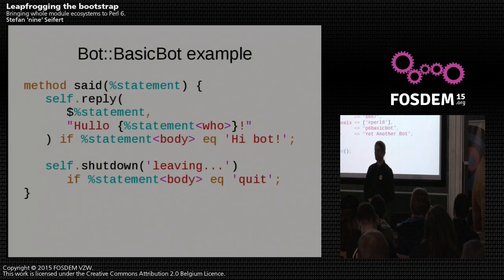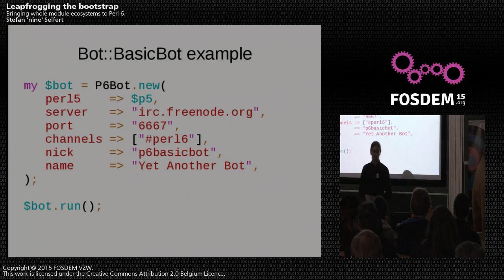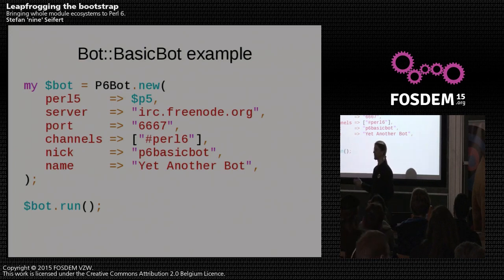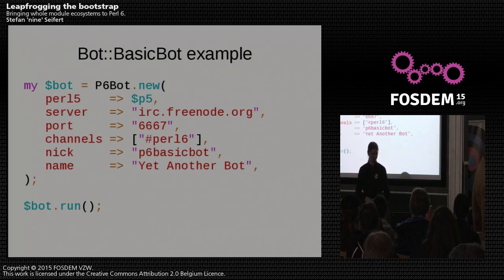Starting the bot is just a matter of copy and paste from the Bot::BasicBot documentation, modulo some syntax changes. The largest difference is an additional argument to the constructor where we pass in our P5 object, and then we run it. If this was a pure advertising talk I'd probably stop here, but there's a gotcha.